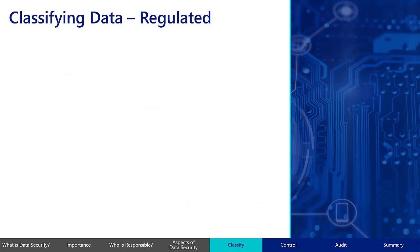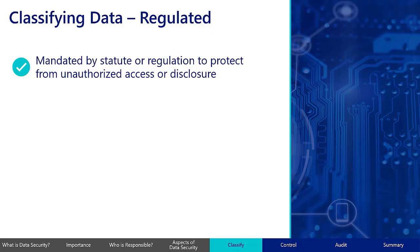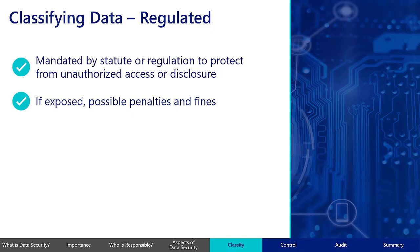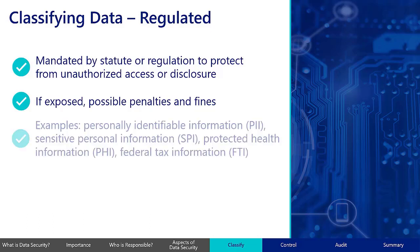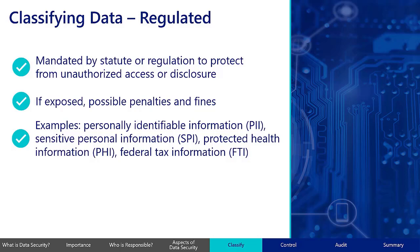Regulated data is information that is subject to specific laws and regulations by a state or federal regulation or other third-party agreement, governing its collection, storage, use, and disposal. This is data mandated by statute or regulation that must be protected from unauthorized access or disclosure. If this data is exposed, the organization responsible could face negative consequences, including penalties or fines. Some examples of regulated data include data that meets the definition of personally identifiable information and sensitive personal information, protected health information, and federal tax information.